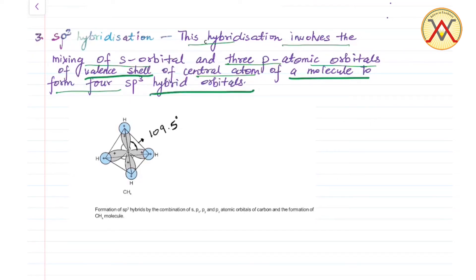Each sp3 hybrid orbital has 25% s character and 75% p character. Formation of sp3 hybrids by the combination of s and three p atomic orbitals of carbon and the formation of methane molecule. Geometry of methane molecule is tetrahedral.